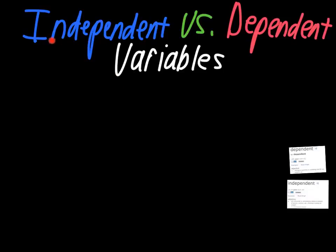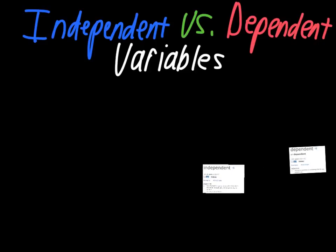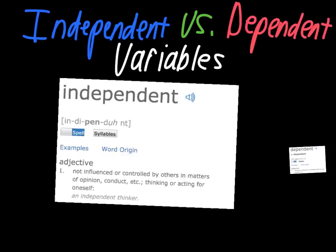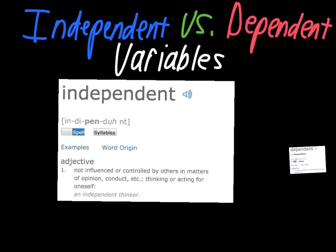We'll talk about the difference between the words independent and dependent first. If you understand the basic definition of the words, it makes it a lot easier to understand how it affects what we're talking about when it comes to different kinds of variables. As many of you probably already know, if somebody or something is independent, it's not influenced by others.